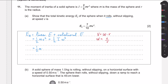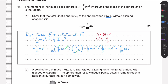Plugging everything in: the linear KE is (1/2)mv², and the rotational KE is (1/2) × (2/5)mr² × (v/r)². The r² terms cancel, leaving (1/5)mv². Adding the two terms: (1/2)mv² + (1/5)mv² = (7/10)mv². That is how we derive the total kinetic energy of a rolling sphere.